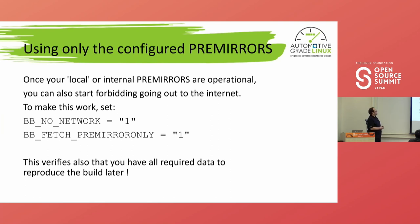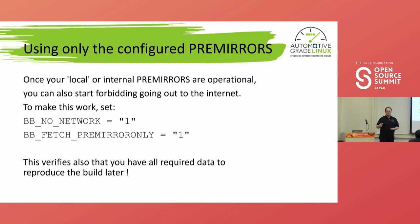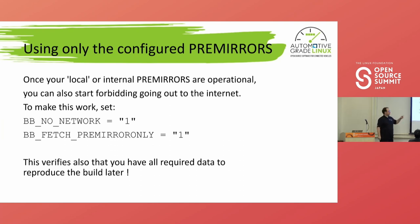A good way to test if your setup works is to use the flag BB_NO_NETWORK, which forbids any network access during the build process. You can still allow the pre-mirror. If the build succeeds, you know two things: the build works without internet access, and your mirror is complete - you have everything you need.